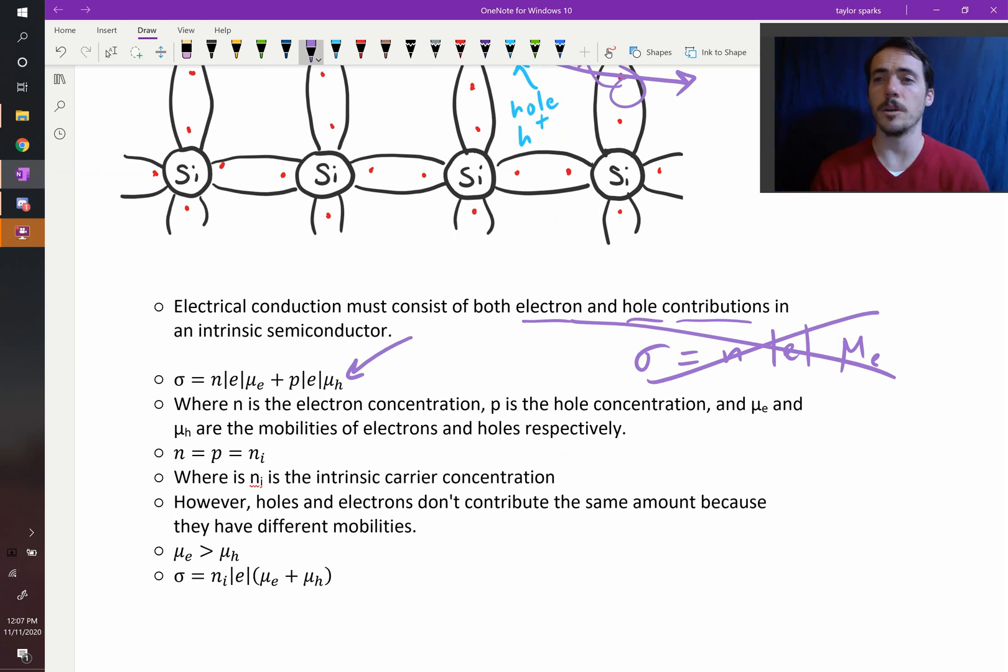So what we end up with is this expression right there. The conductivity is the number of electrons, n, per unit volume, that's the number of electrons per unit volume, multiplied by the charge of an electron, multiplied by the mobility of an electron. But we have to add to that the number of holes, we call that P, that's the concentration of holes in number per centimeter cubed, times the charge of an electron, since it has the same charge, it's a missing electron, still has the same charge, it's just positive, multiplied by the mobility of our holes.